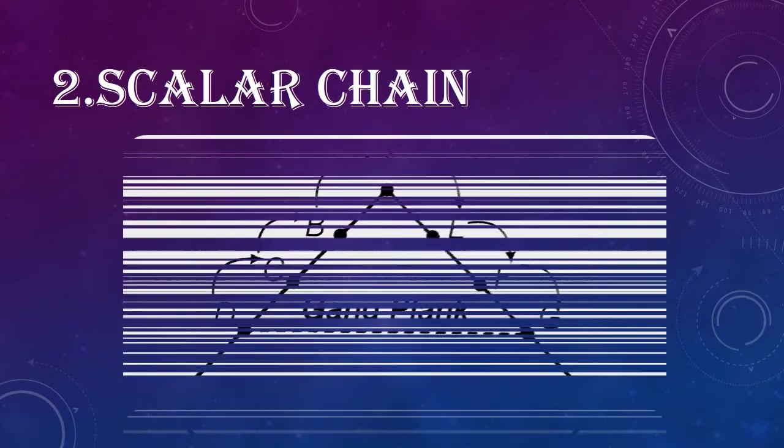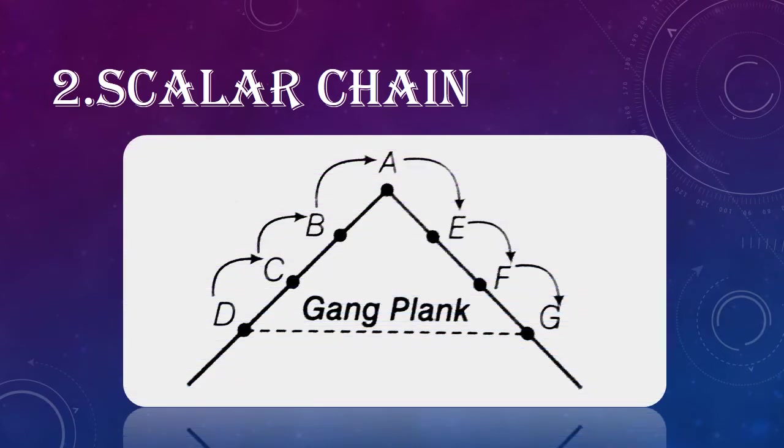The next principle is scalar chain. The scalar chain is a formal line of authority which helps individuals in the organization. There are members A, B, C, and D, and members E, F, and G. Normally, we follow the scalar chain in the organization.